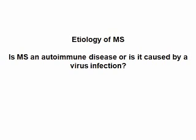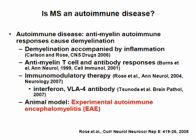We do not know the cause of MS. Currently, there are two hypotheses of the etiology of MS. One is that MS is an autoimmune disease, and the other is that MS is caused by virus infection. An autoimmune hypothesis of MS is that autoimmune responses against myelin cause demyelination. Supportive evidence includes: first, you can detect T-cell and macrophage infiltration in demyelinating regions in MS; second, myelin-specific T-cell and antibody responses have been demonstrated in MS.